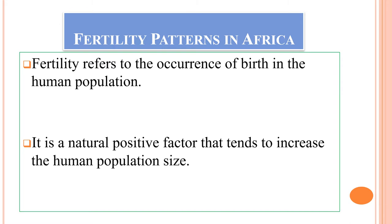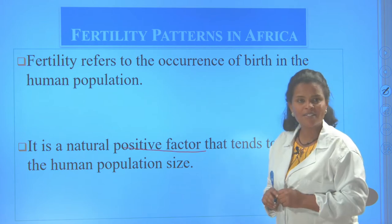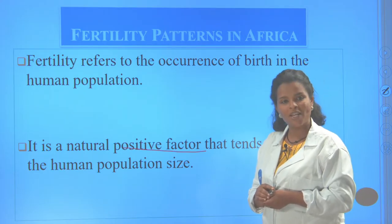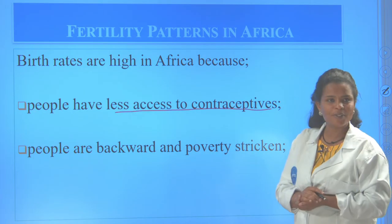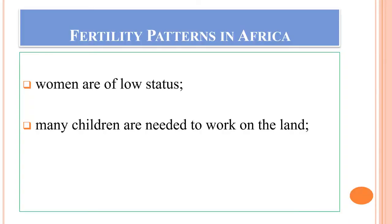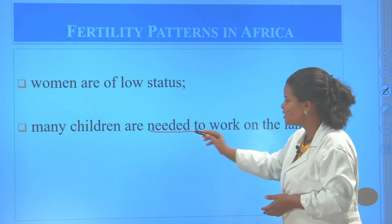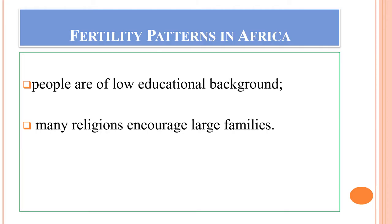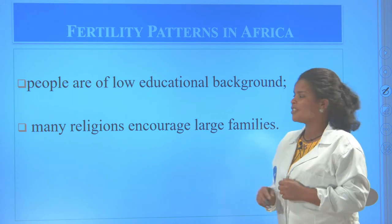Fertility refers to the occurrence of birth in the human population. It is a natural positive factor — if an area has high fertility, it has a high population. Birth rates are high in Africa because people have less access to contraceptive methods, poverty is widespread, women have low education status, many children are needed to work on land, people mostly live in rural areas, and many religions encourage large family size.